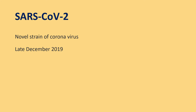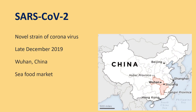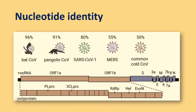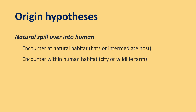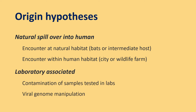SARS-CoV-2 is a novel strain of coronavirus which was reported in late December 2019 from Wuhan, China, from a seafood market. SARS-CoV-2 has close genomic similarity with bat coronaviruses — 80% similarity to SARS-CoV-1 and 55% similarity to Middle East respiratory virus. The origin of SARS-CoV-2 still remains controversial. It could be due to a natural spillover into humans, or it could be lab-associated where contamination of samples tested in labs could have led to viral propagation.